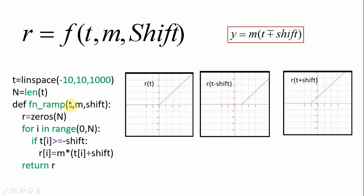We define the ramp function by fn underscore ramp which is a function of pass the parameters t, m and shift.